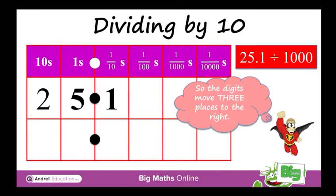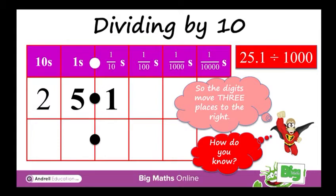So the digits move three places to the right, and they move to the right of the place value grid because they are getting smaller. To the right of the place value grid, the value of those digits is smaller. So the 2 is currently in the 10s, the 5 is in the 1s, and the 1 is in the 10ths — and we're going to move each of those digits to make them smaller.